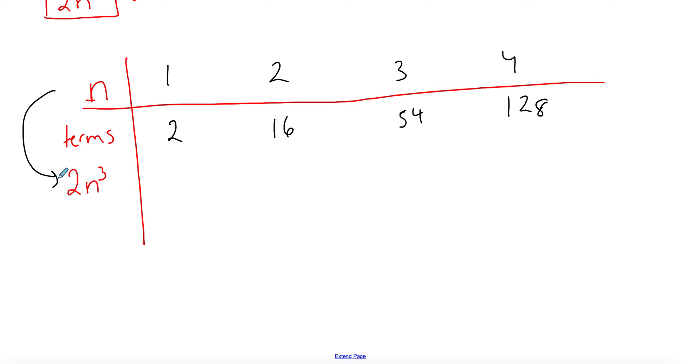Then you start calculating this, but the n you substitute has to come from here. So you have 2(1)³, which is 2. Then you have 2(2)³ and so on. You continue as such with all the values, keeping on changing the n.